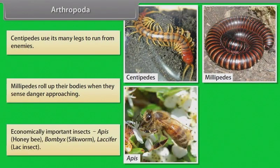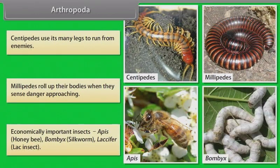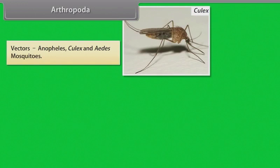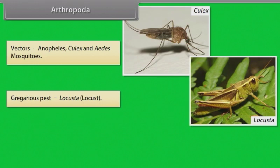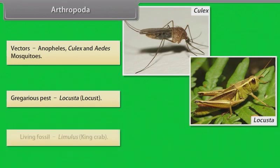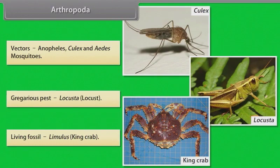Economically important insects include Apis (honeybee), Bombyx (silkworm), and Laccifer (lac insect). Vectors include Anopheles, Culex and Aedes mosquitoes. A gregarious pest is Locusta (locust). A living fossil is Limulus, the King Crab.